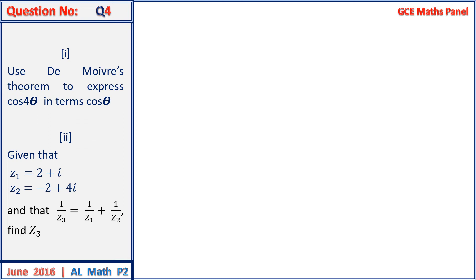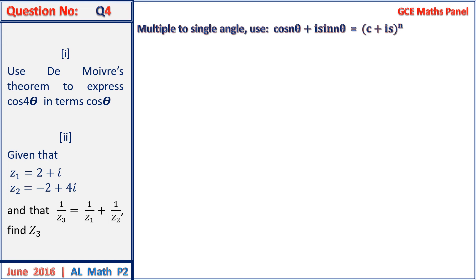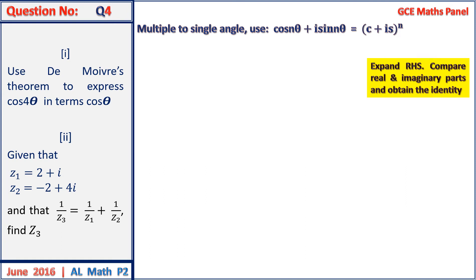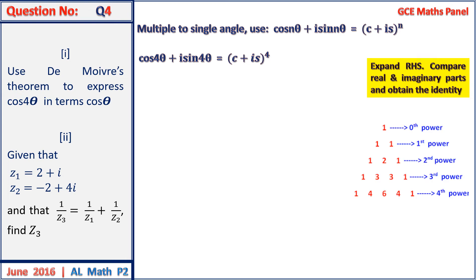Question 4: use De Moivre's theorem to express cos 4 theta in terms of cos theta. This requires representing multiple angles in terms of single angles using cos n theta plus i sin n theta equals cos theta plus i sin theta all to the power n. We expand the right-hand side and compare real and imaginary parts. Using Pascal's triangle for the power 4 expansion gives cos to the power 4 plus 4 cos cubed i sin theta plus 6 cos squared times i sin theta squared plus 4 cos times i sin theta cubed plus i sin theta to the power 4.